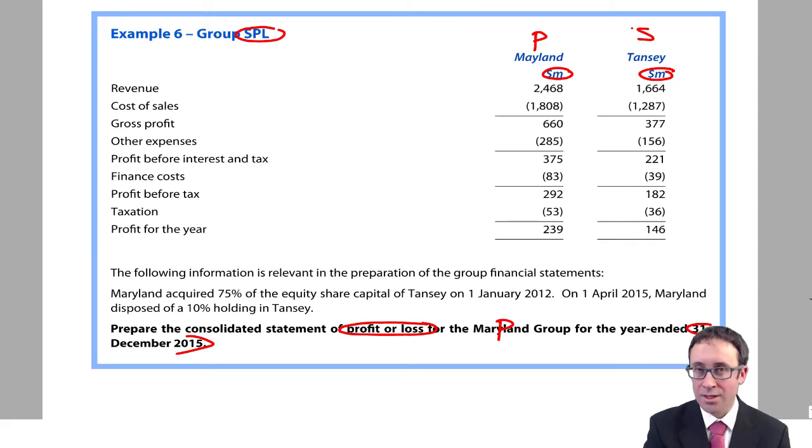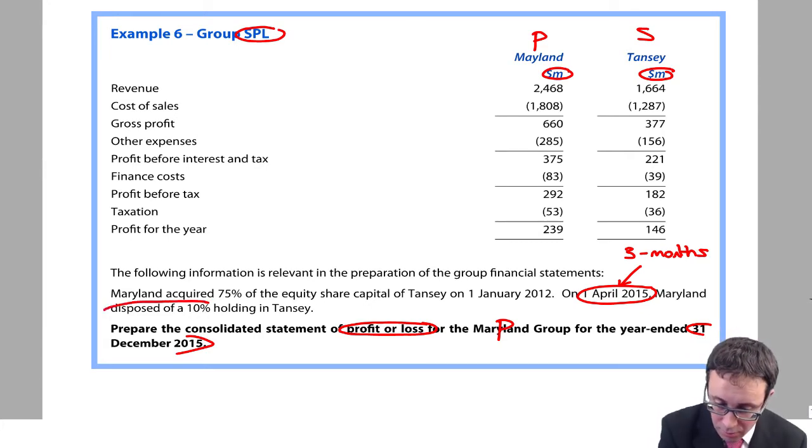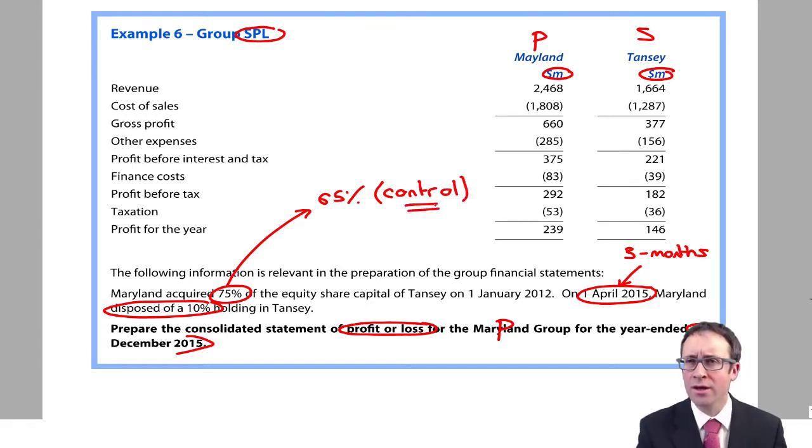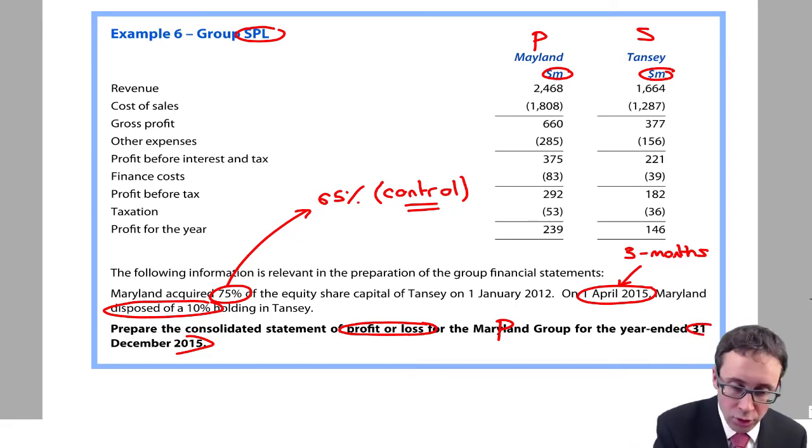We need to have a look at what's happened this year because it says on the 1st of April 2015, so partway through this year, year-end December, 1st of April, January, February, March, so three months into the year. What happened is that Maryland disposed of a 10% holding in Tansy. So that 75% is going to change into 65%. So we have a step disposal. But the key bit that you have there is that when you have that step disposal, we still have control. So for the full year, we have a subsidiary and we have control.